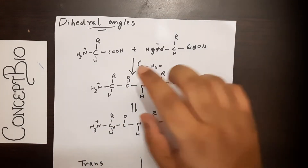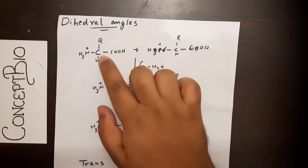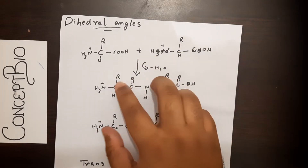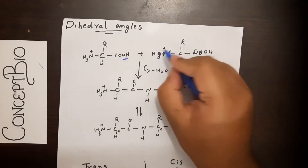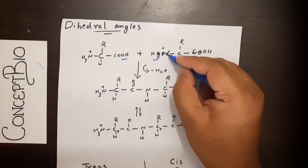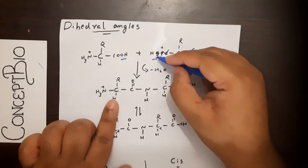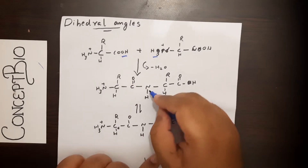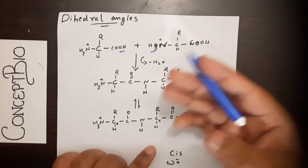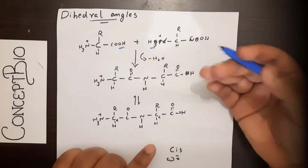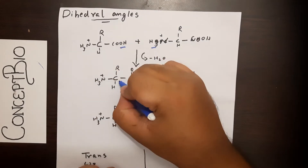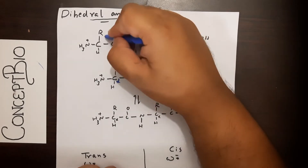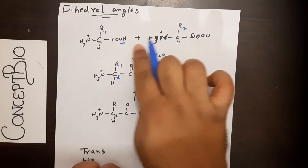We all know what a peptide bond is. Suppose we have one amino acid with a C-alpha, C, O, H terminal group and another amino acid. Peptide bond formation occurs when the C-O-H terminal and the N-H3 terminal undergo a condensation reaction where a water molecule is removed, forming an amide bond — called a peptide bond. We just remove a water molecule and a peptide bond is formed.